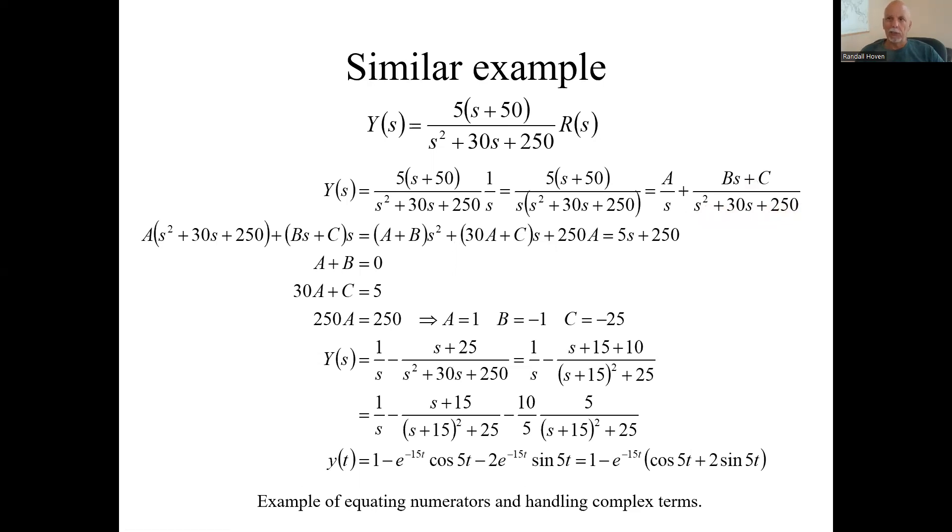And what we put up in the numerator is a linear term. One less order than the denominator. Instead of just a constant, we have As plus another constant. Here we have to use the equating numerators method.